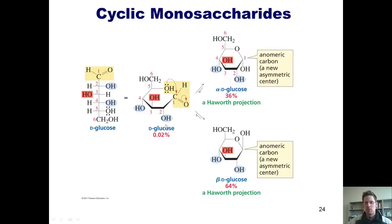The open chain form of glucose in equilibrium exists at about 0.02%. This form of glucose with the OH pointing down exists in about 36% in equilibrium. And this one with the OH pointing up exists at about 64% in equilibrium.